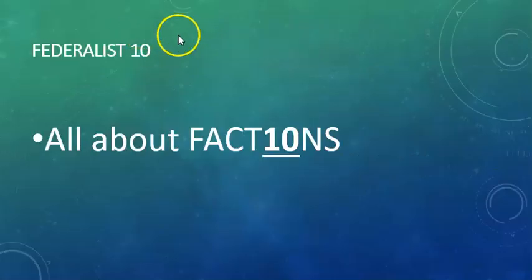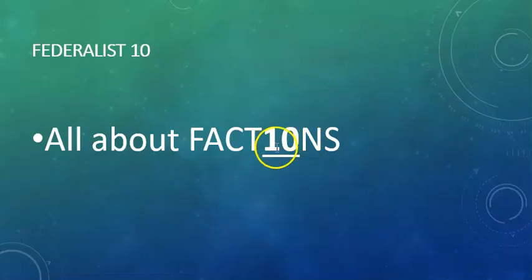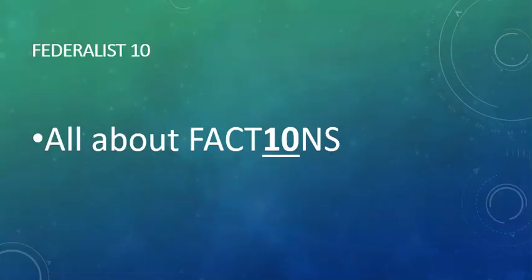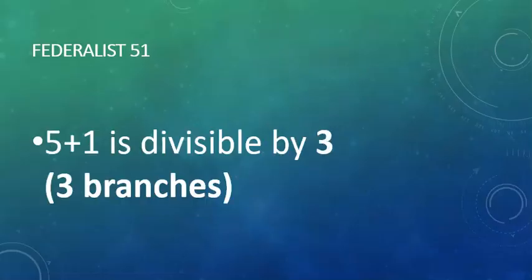Federalist 10 is all about factions. How do we remember that? Well, think about the number 10 — that's literally in the word 'factions.' The 'I' and the 'O' are there. So definitely remember factions for Federalist 10.